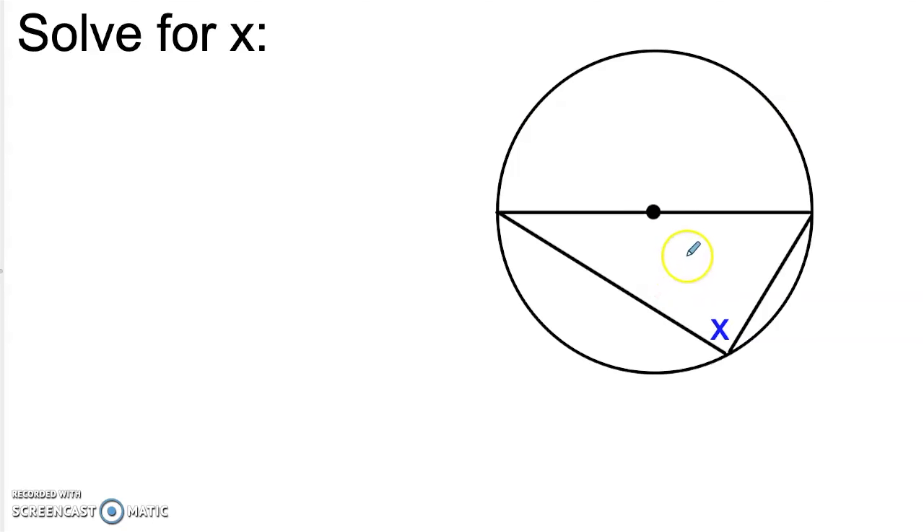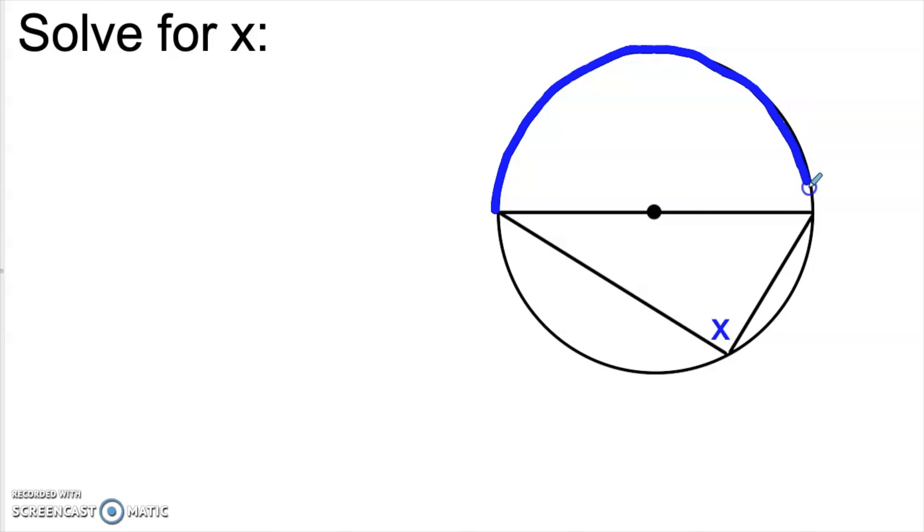So there you go. Once again, we have the same problem, same result — x is 20 both times — but a different method.